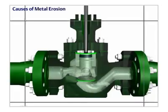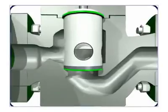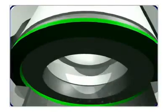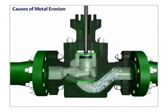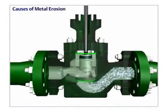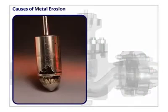Wherever there's a restriction in flow, the decrease in pressure can cause a fluid to reach its vapor point. Flashing occurs when the fluid vaporizes and remains a vapor. Metal erosion caused by flashing appears smooth and shiny.